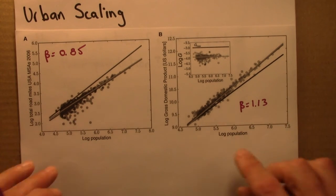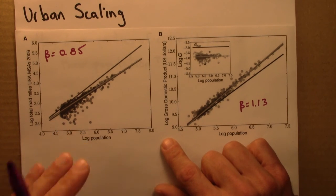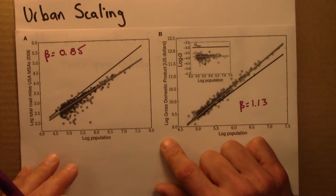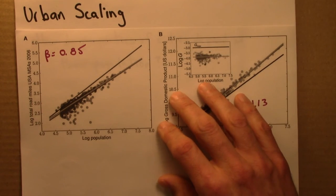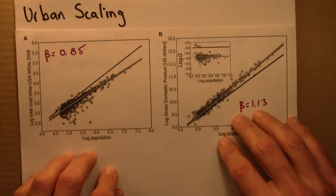So, there's an urban scaling group at the Santa Fe Institute, led by Luis Bettencourt, Jeff West, and many others. They produced a series of papers, and are continuing to do so, with lots and lots of plots like this. So, there's a lot more data we can look at.